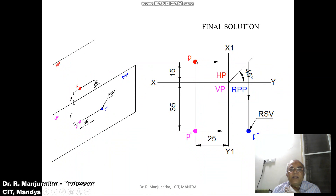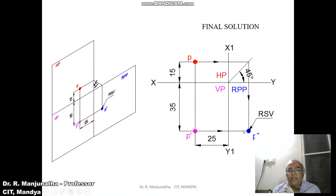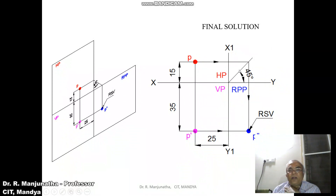From the XY line, measure 15mm above and mark the point p. Then draw a horizontal projector from the front view p-dash to the side view with a thin line. Draw a 45-degree line adjacent to HP, then draw a projector from the top view to the 45-degree line, transferring the 15mm behind VP from vertical into horizontal direction. Then draw a vertical projector from that point on the 45-degree line to the profile view. Where the front view and top view projected points intersect, that point is p-double-dash.